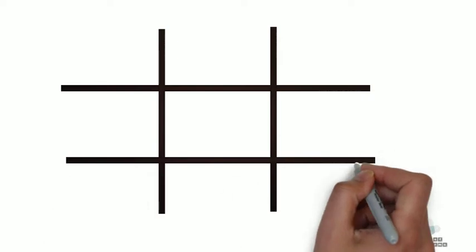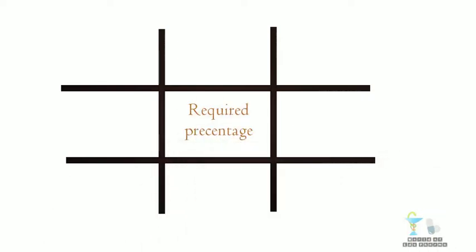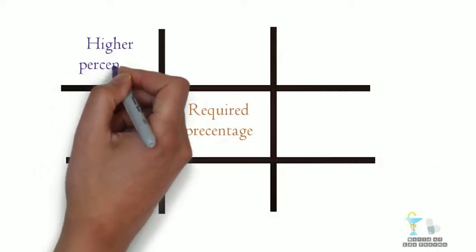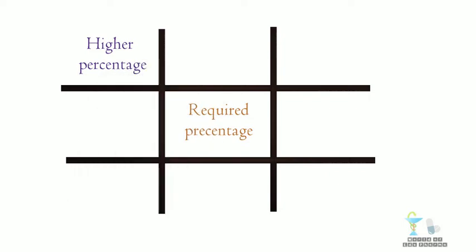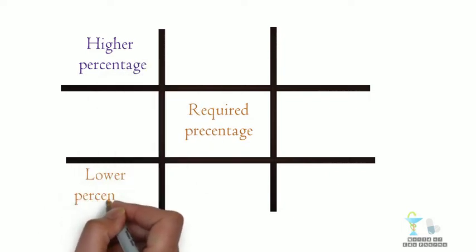1. Write the required percentage at the center. 2. Higher percentage on top left side. 3. Lower percentage on bottom.